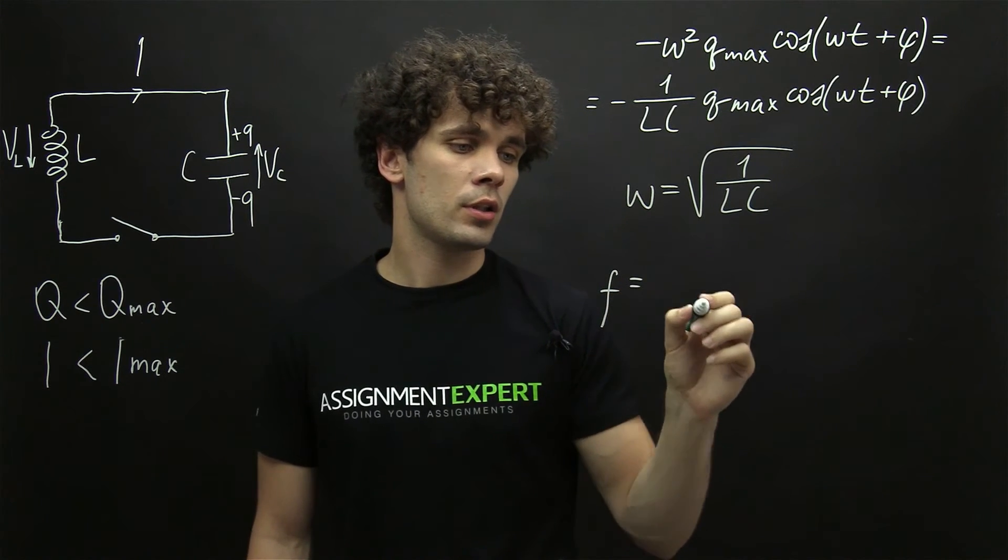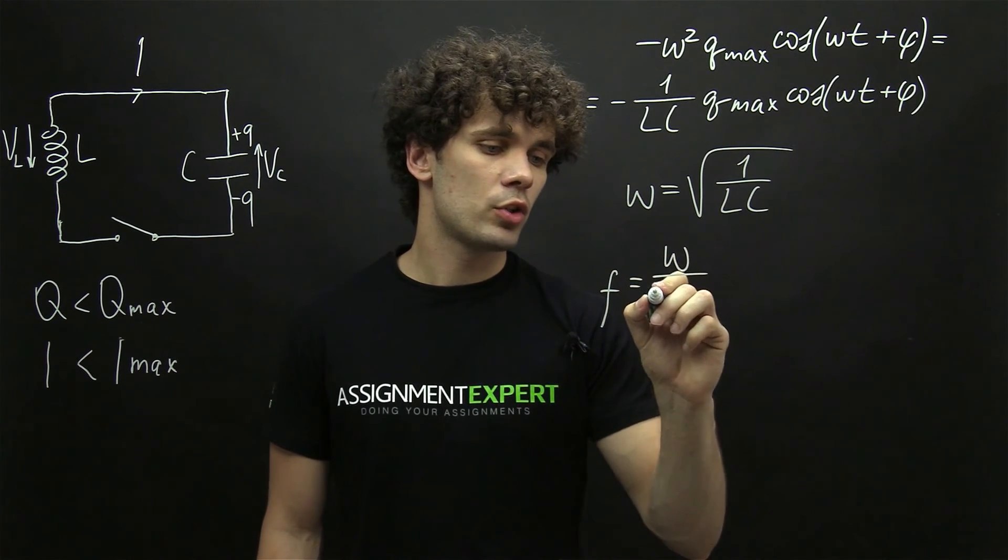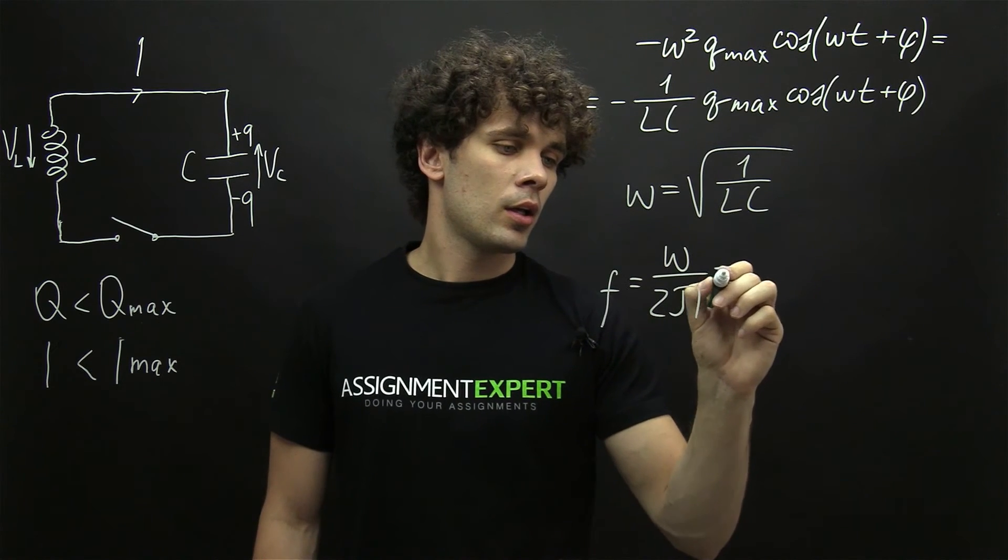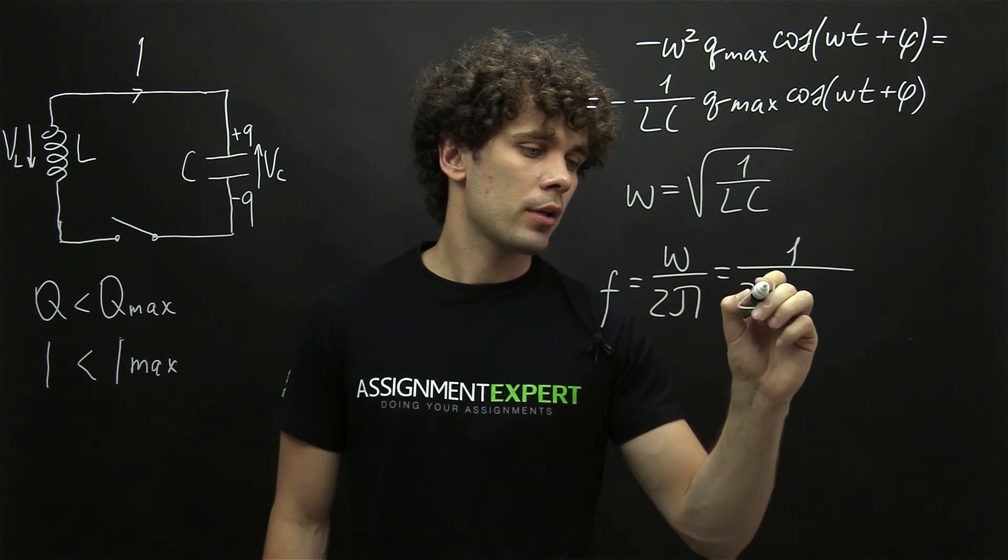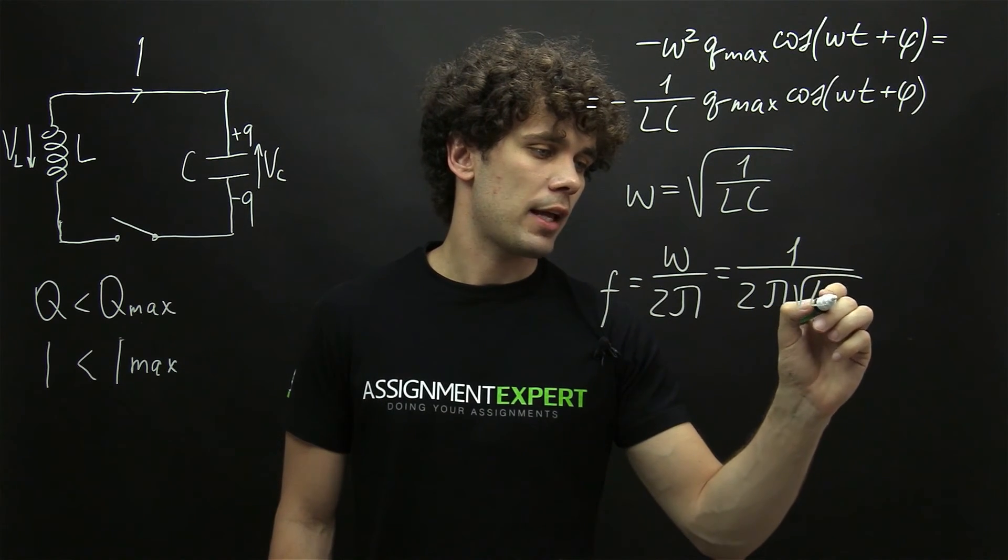F, the frequency, equals omega over 2 pi. And we get 1 over 2 pi times the square root of LC.